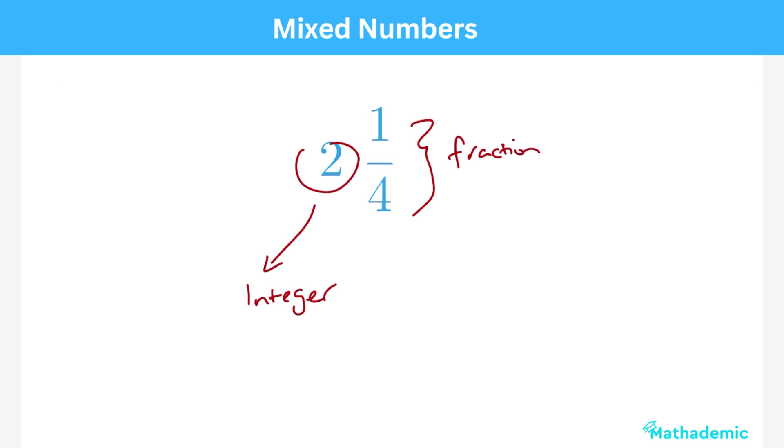To convert from a mixed number to an improper fraction, which is a top-heavy fraction, multiply the whole number by the denominator and then add it to the numerator.